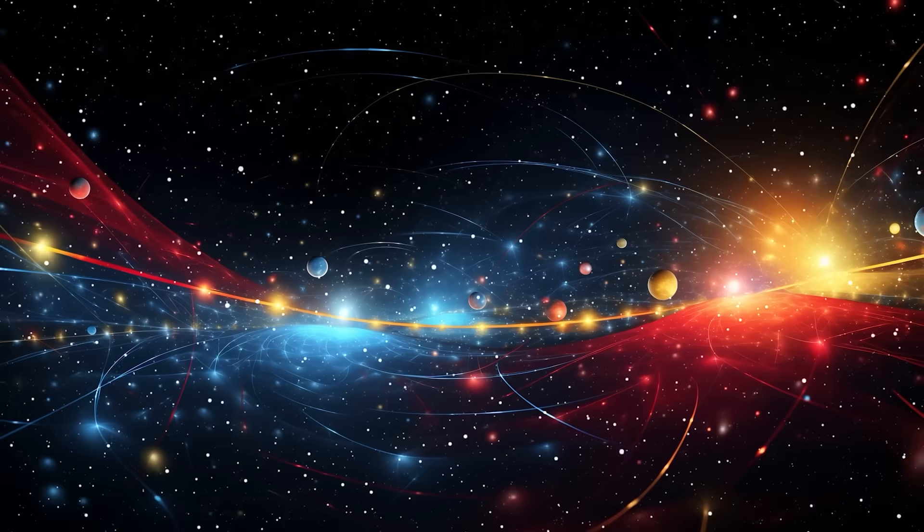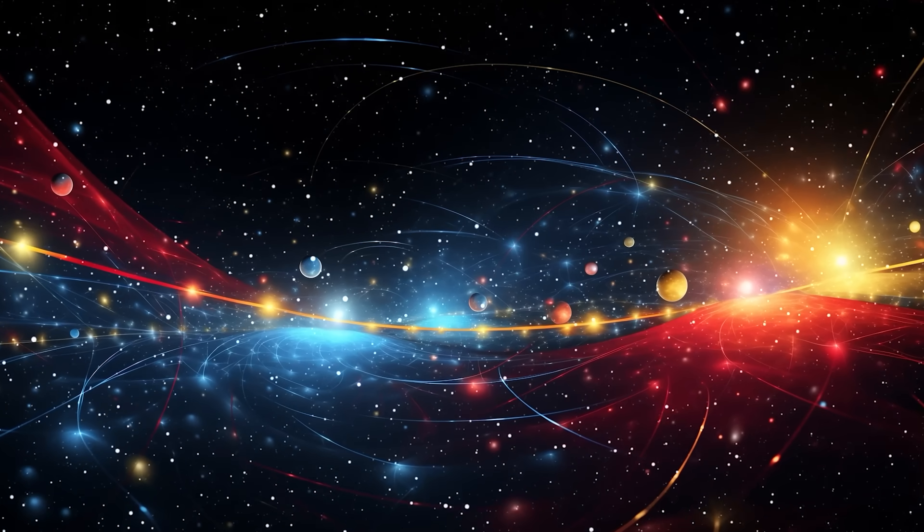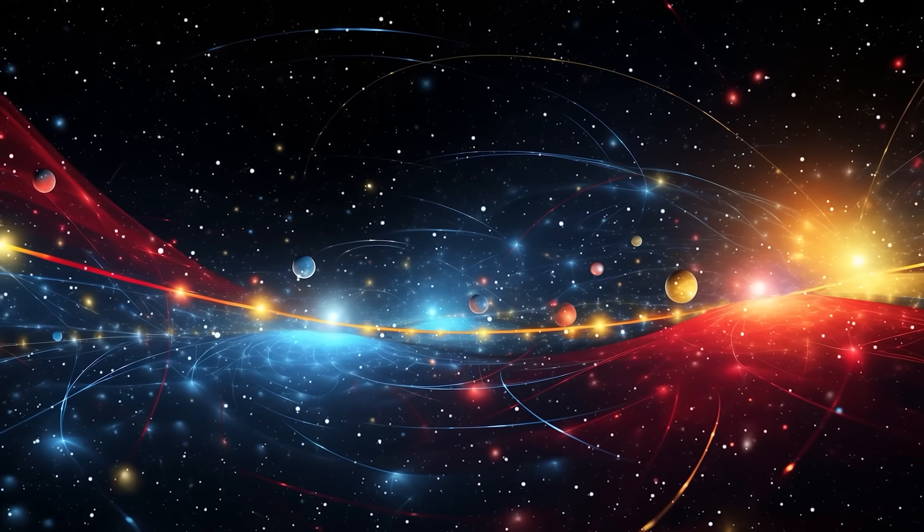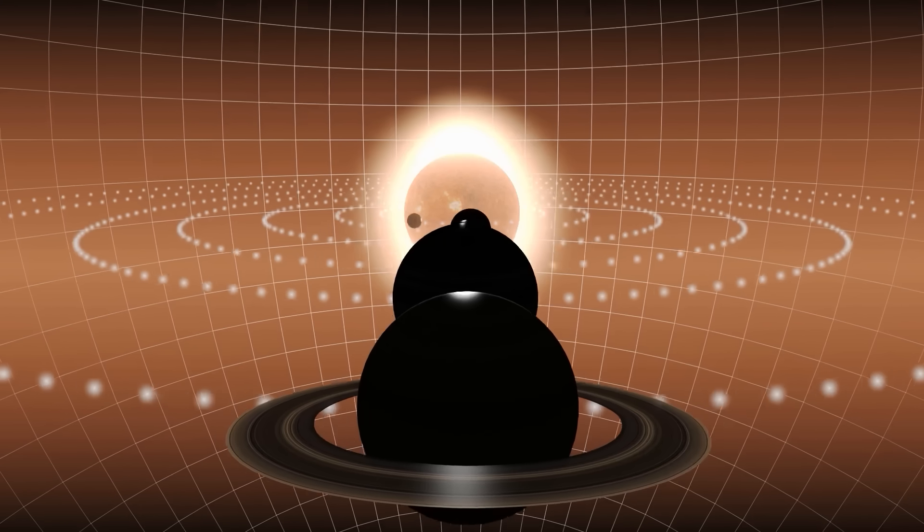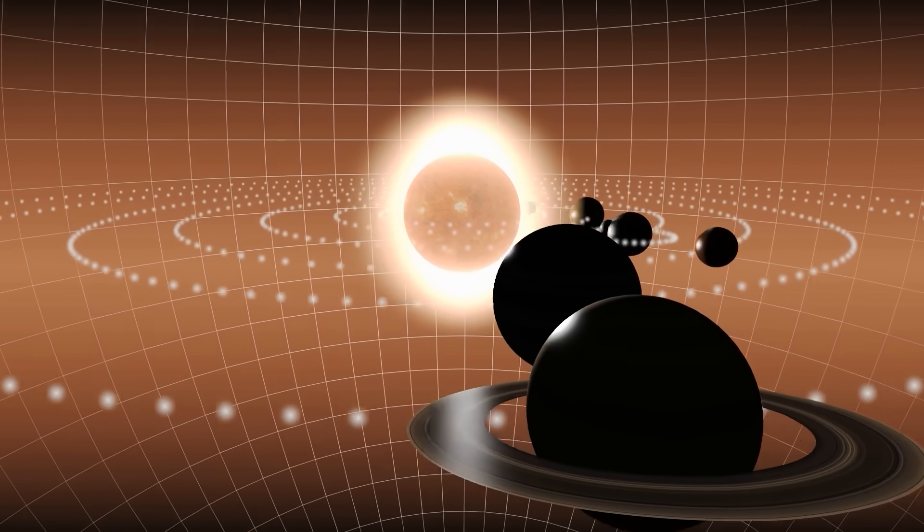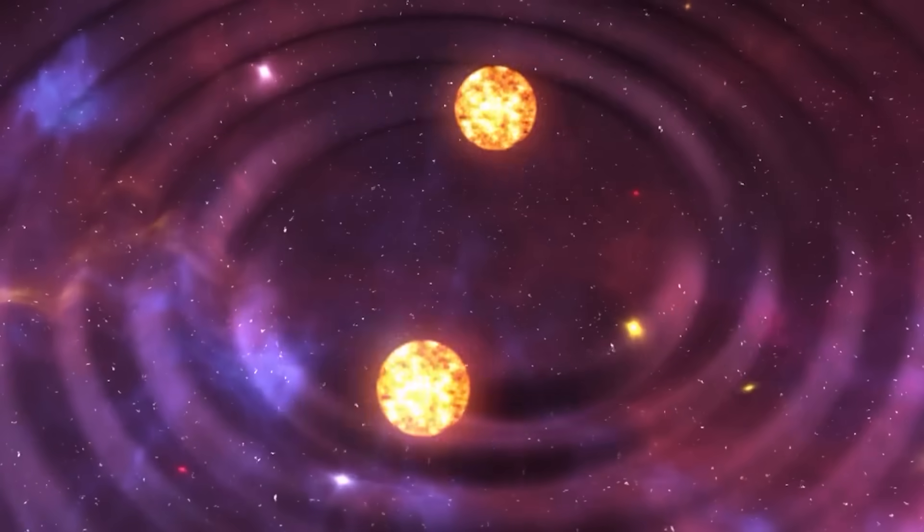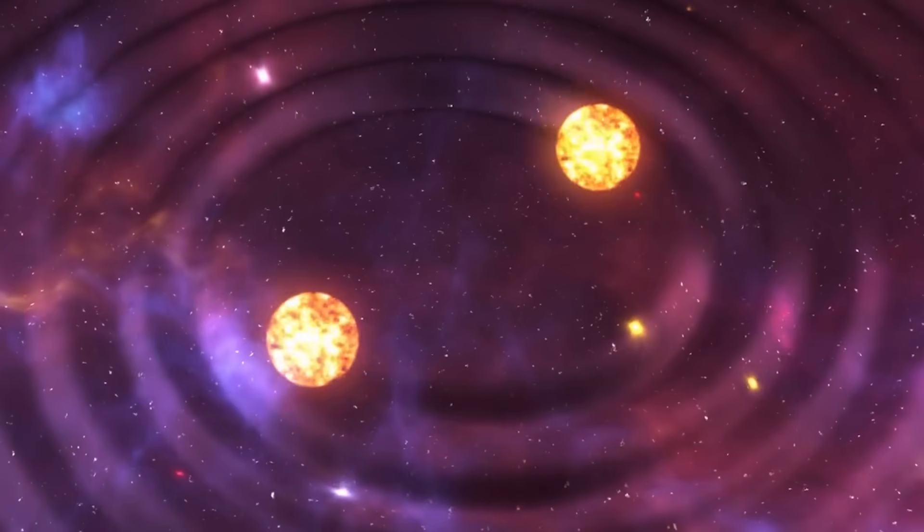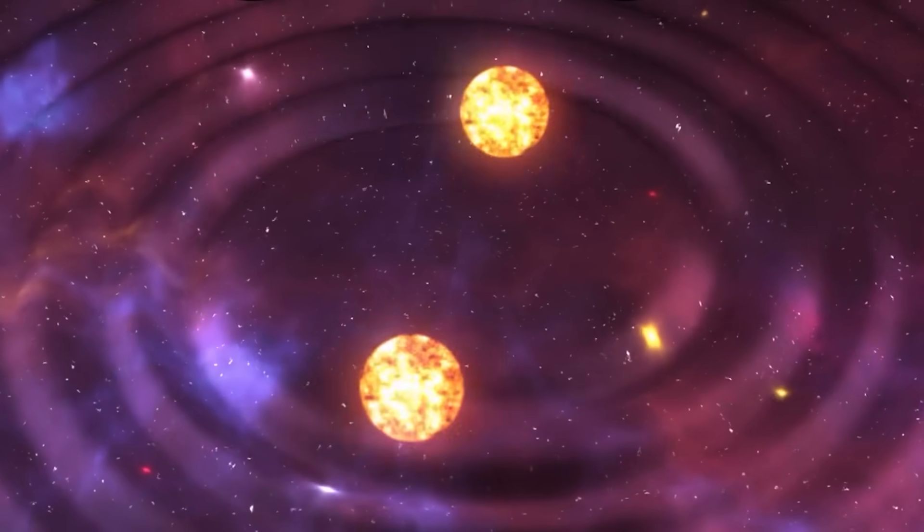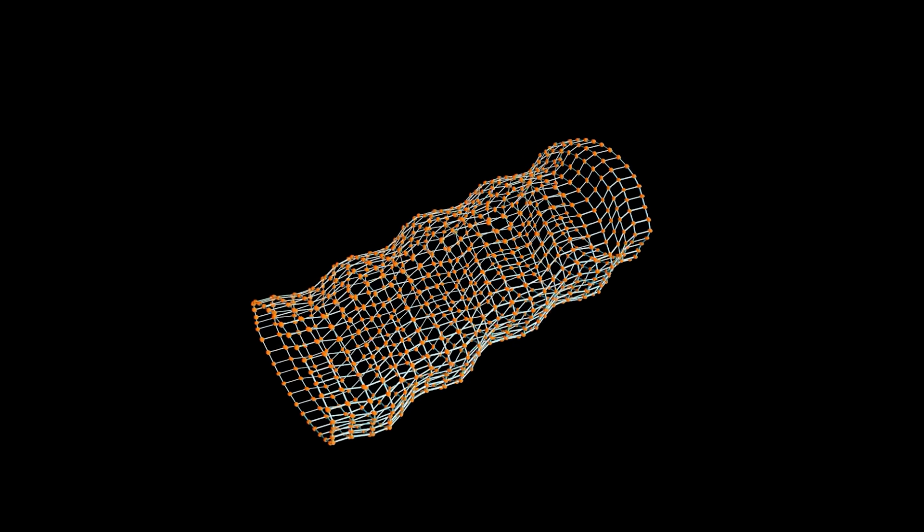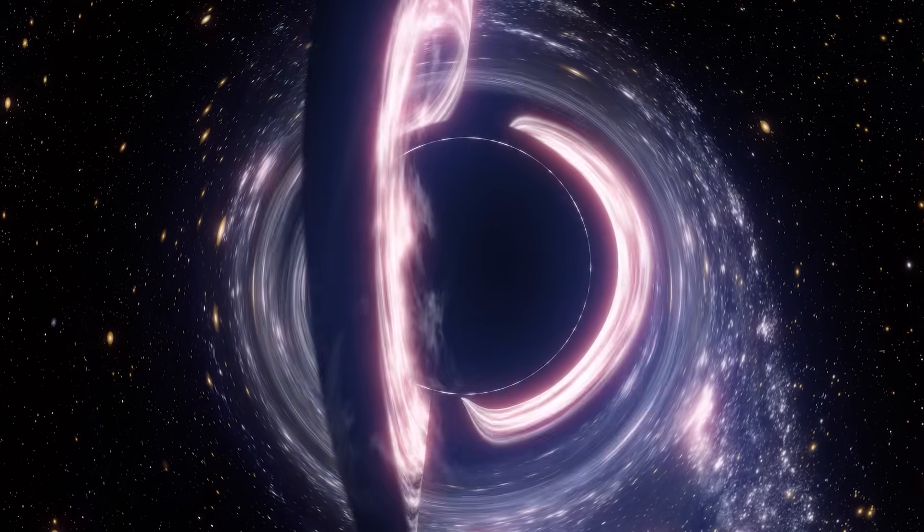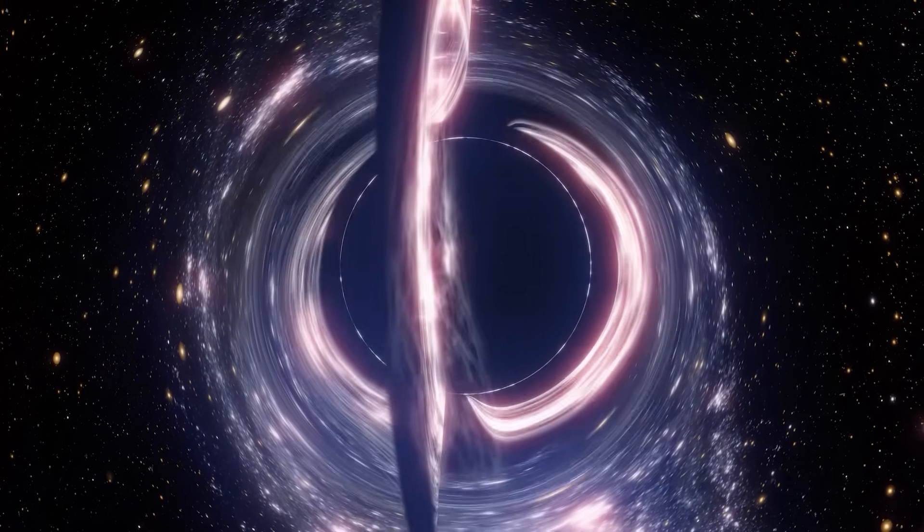but together form a dynamic, four-dimensional fabric. Within this fabric, all sizes, masses, and effects behave relative to each other, influencing and changing each other. In Einstein's model, mass means that space and time curve. A planet, a star, or a black hole presses on space-time like a ball on a stretched cloth. Other objects do not move through invisible forces, but simply follow the curved structure of space. We call this gravity.